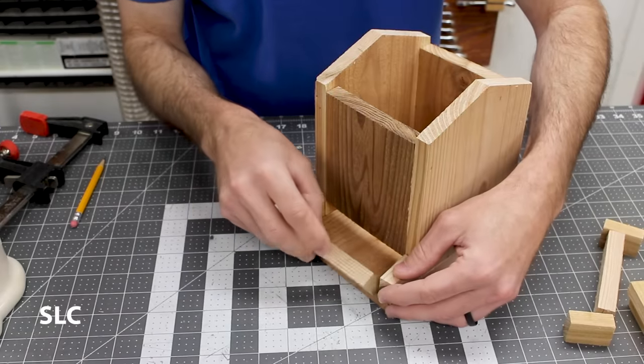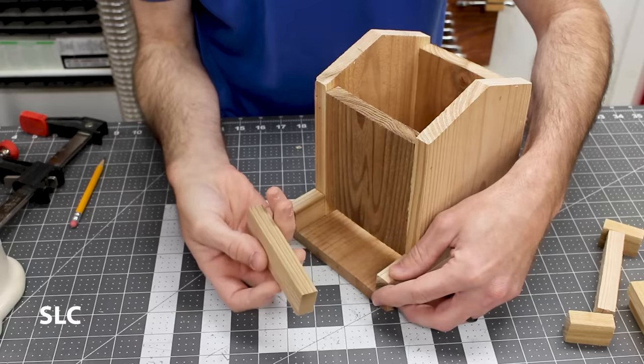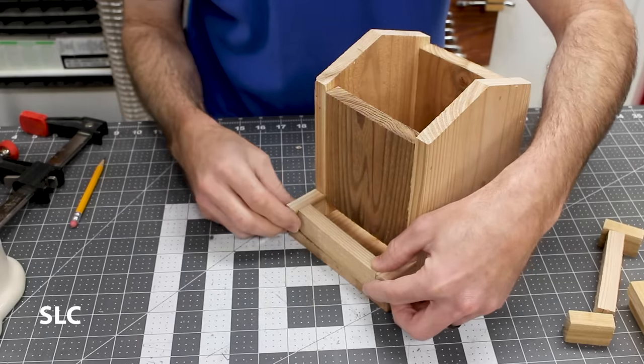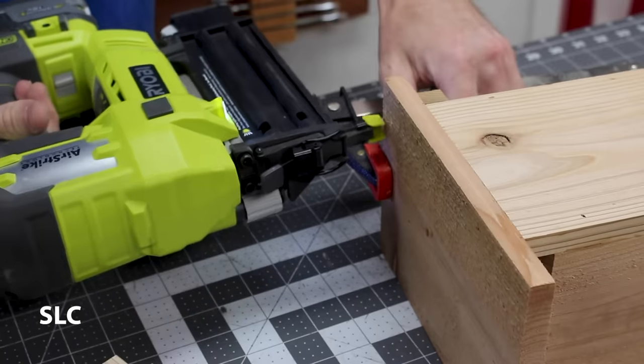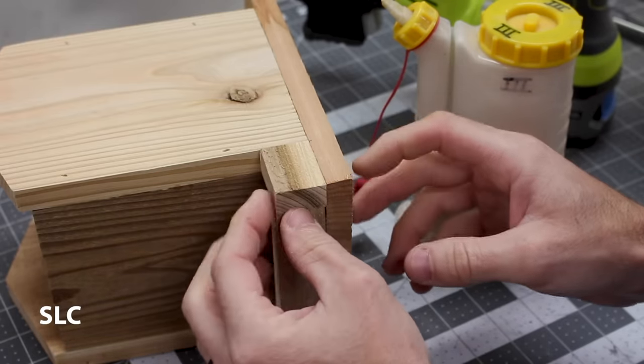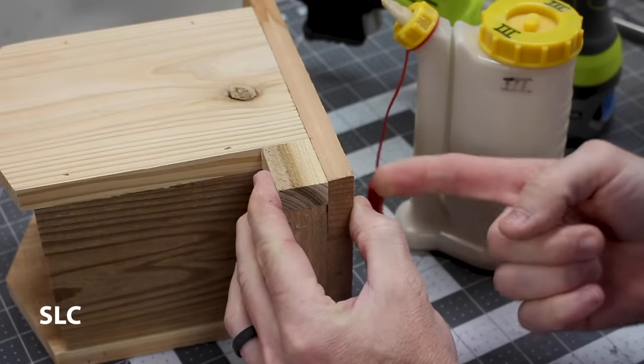Next up, we're going to attach these borders along the sides here. To do that, we're going to line everything up, put some glue along the big one here. We're going to clamp it down, flip it over, and add some brad nails from the bottom. Now since there's not a whole lot of room for these sides here, I'm going to glue it up on the bottom and we're just going to hold it in place with my finger and add a brad nail.